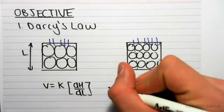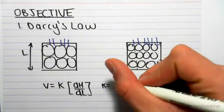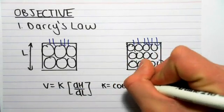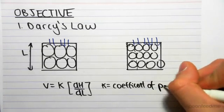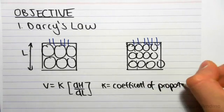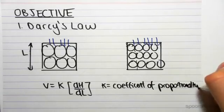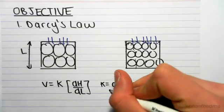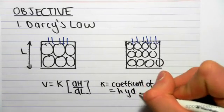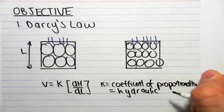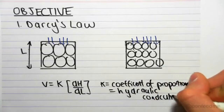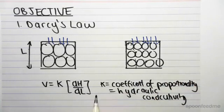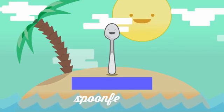K is equal to the coefficient of proportionality, or it's called the hydraulic conductivity. That's what K is, so K is dependent on the actual soil sample, and dH and dL.